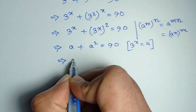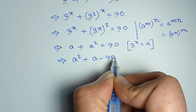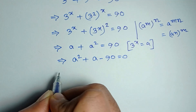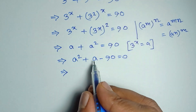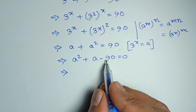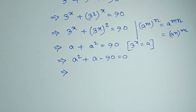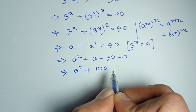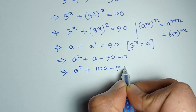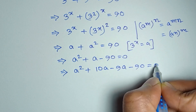Or, a squared plus a minus 90 is equal to 0. If we break the middle term as 10a minus 9a, since 90 equals 9 times 10, then we get a squared plus 10a minus 9a minus 90 is equal to 0.